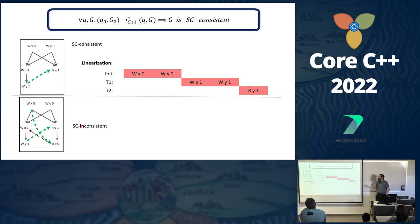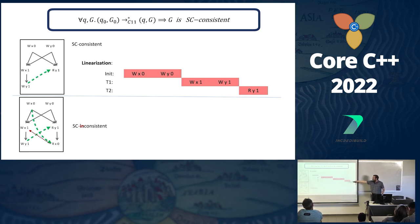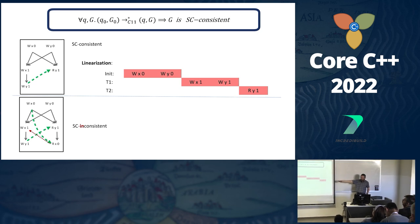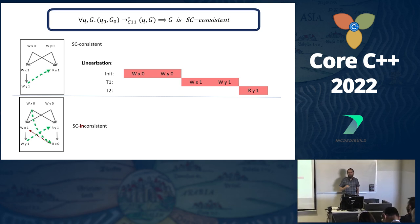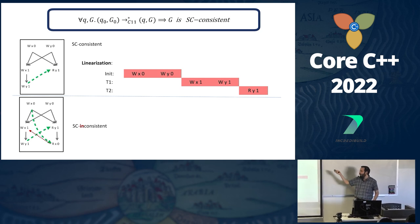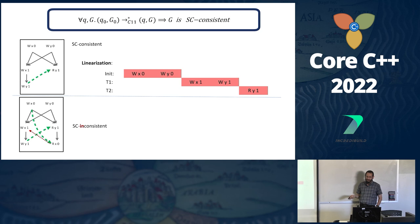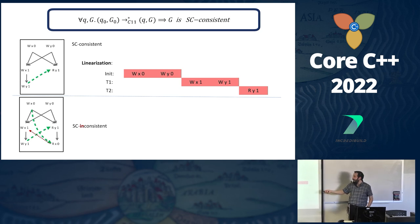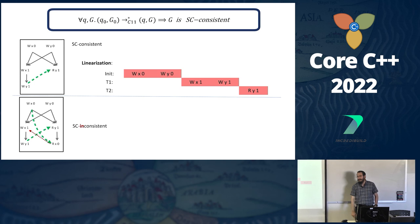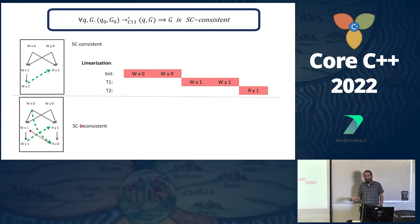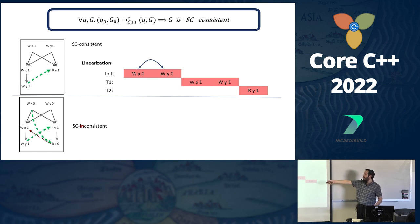If we can take the events of the graph and linearize them, we have sequential consistency. The consistent graph can be linearized: first initialization, then thread 1 runs, then thread 2 reads 1 for y. But the inconsistent graph can't be linearized — and we need just one linearization for it to be SC-consistent.